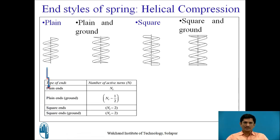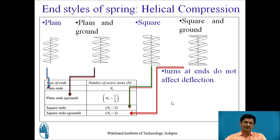For these typical springs, first one plain, the total number of turns are given as nt which are active turns. For plain and ground end, we need to reduce half turn from the total number of turns to get the number of active turns. For the square and ground ends, we need to reduce two number of turns from the total number of turns. The turns at the end do not affect the deflection or do not take part in the deflection.